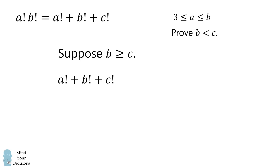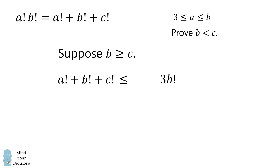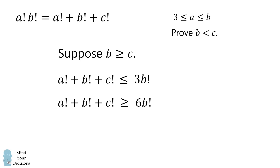We can bound the sum a factorial plus b factorial plus c factorial as follows. Since a ≤ b, a factorial ≤ b factorial; and since we've supposed c ≤ b, c factorial ≤ b factorial. So the sum is at most 3 times b factorial. But the sum also equals a factorial times b factorial, and since a ≥ 3, this is at least 3 factorial times b factorial, which equals 6 times b factorial. We've shown the upper bound is lower than the lower bound — a contradiction. Therefore b is less than c.